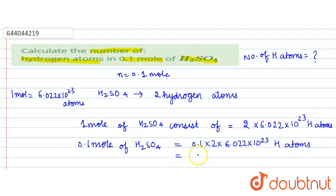So after solving it, the answer comes out to be 12.004 × 10²² hydrogen atoms. Therefore, 0.1 mole of H₂SO₄ consists of 12.004 × 10²² hydrogen atoms. Thank you.